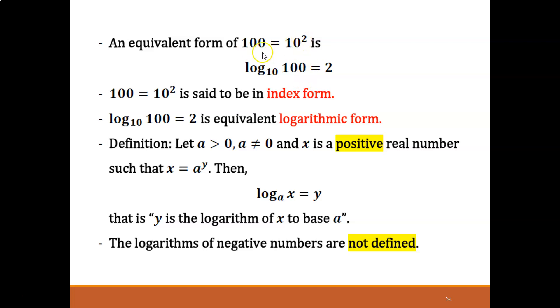This one is in indices form. 100 equals 10 squared is said to be in index form, while this one is in the logarithmic form or in the log form. So both of these are actually equal.